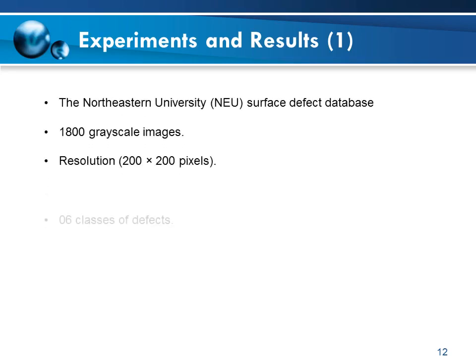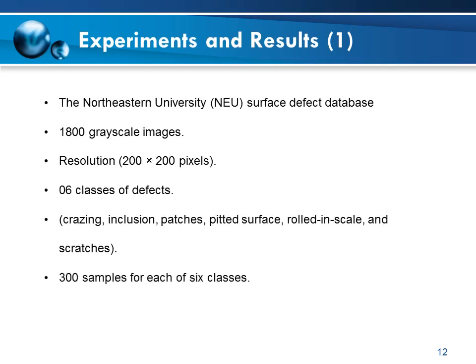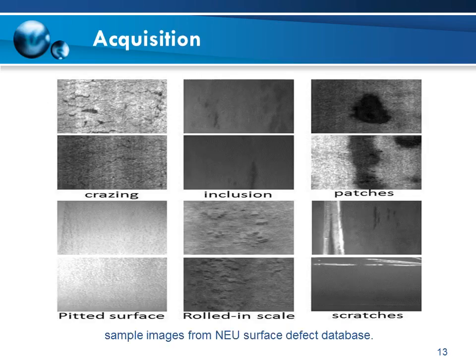The performance of the proposed steel surface defect classification system is evaluated by conducting a series of experiments on the well-known NEU steel surface defect database. It includes a total of 1800 grayscale images of six common hot rolled strip defect types: crazing, patches, pitted surface, inclusion, rolled-in scale, and scratches — 300 samples of each surface defect with an original resolution of 200 by 200 pixels. This figure shows sample images from this surface defect database.